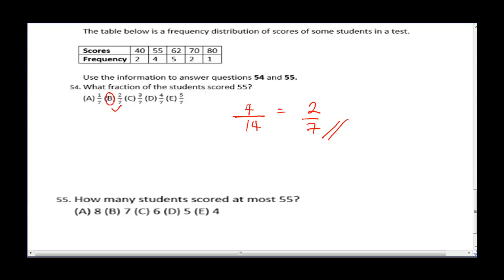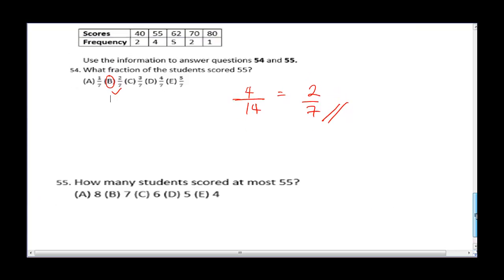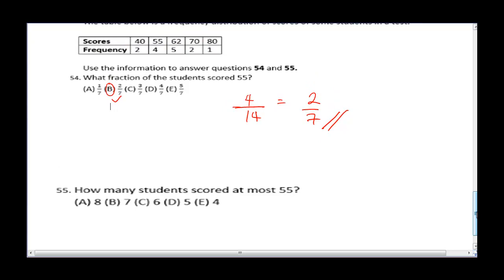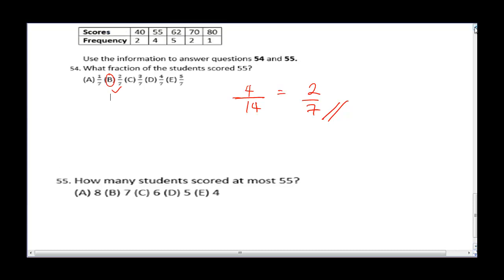The final question asks: how many students scored at most 55? 'At most 55' means students who scored 55 or below. From the frequency table, students who scored 55 are 4 and students who scored 40 are 2. So the total is 2 + 4 = 6. The correct answer is C.